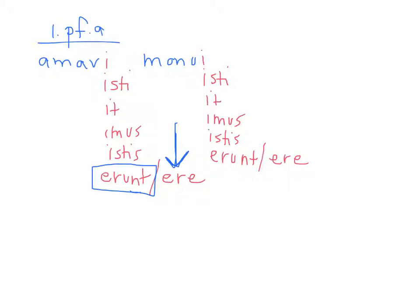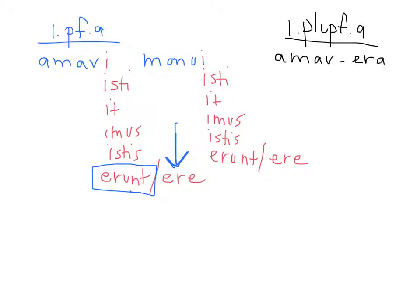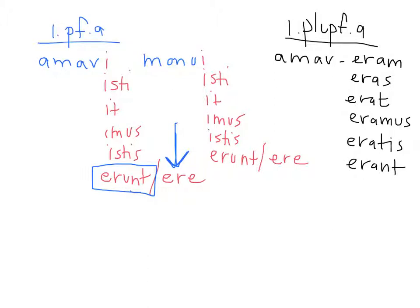The other tense using the third principal part is the indicative pluperfect active. The pluperfect also uses the third principal part, except you add -eram, -eras, -erat, -eramus, -eratis, -erant to the stem. Both the perfect and pluperfect use the third principal part, whereas the imperfect, future, and present use the second principal part.